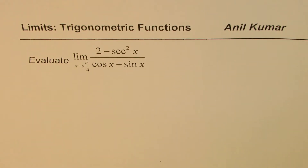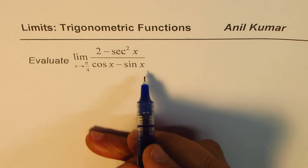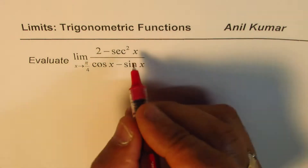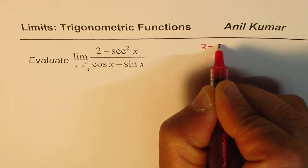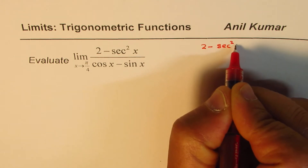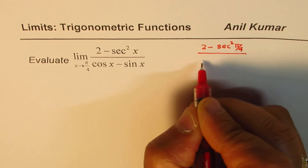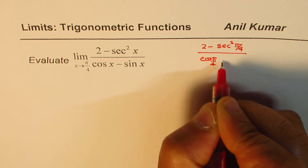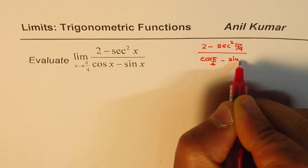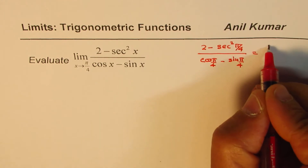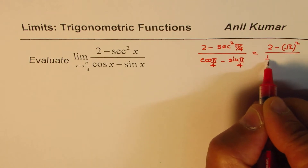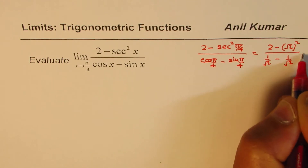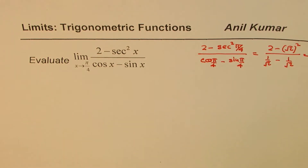In such questions, if I substitute x equals pi by 4, I get the 0 over 0 form. Let me show you that. If I substitute pi by 4, I get 2 minus secant squared pi by 4, divided by cos pi by 4 minus sin pi by 4. That is 2 minus square root 2, whole squared, and this is 1 over square root 2 minus 1 over square root 2. That is clearly 0 over 0 — the indeterminate form.